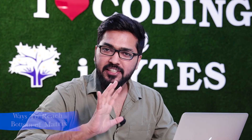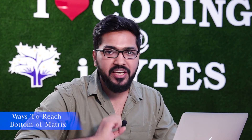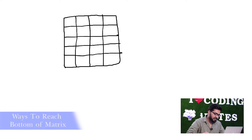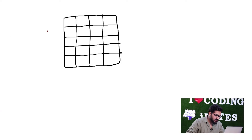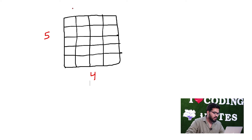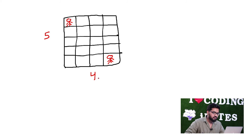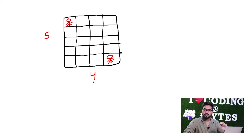Hi! So, the next problem is a very interesting problem. The problem is that we have a matrix — let's say a matrix of 5 by 4, with 5 rows and 4 columns. There is a person over here who wants to reach this position — from top left, he wants to reach bottom right.